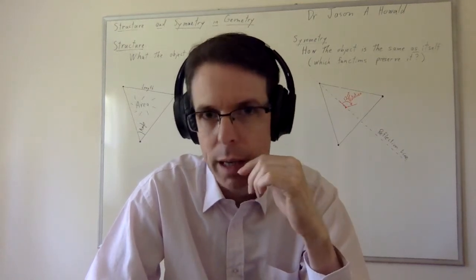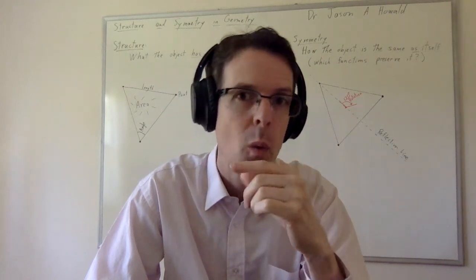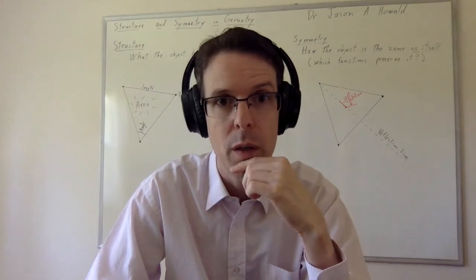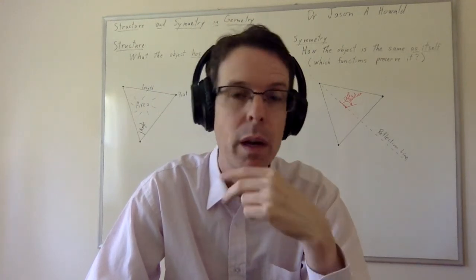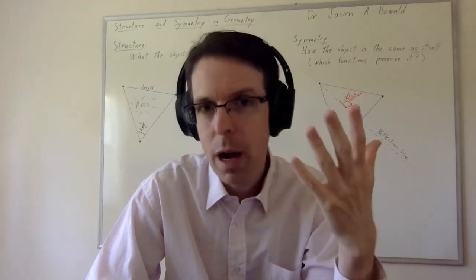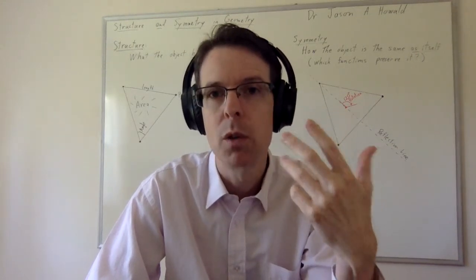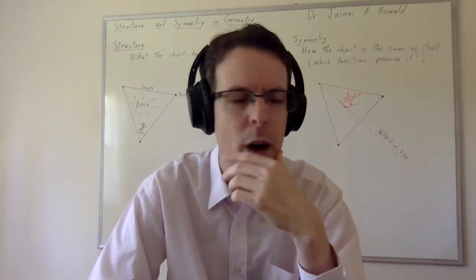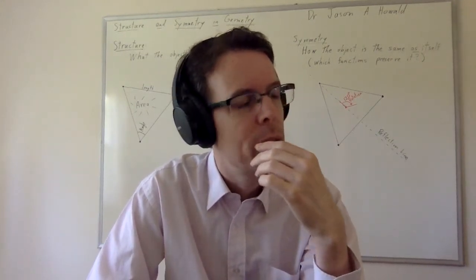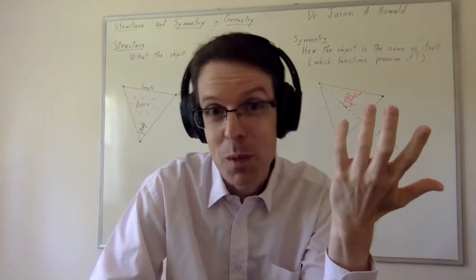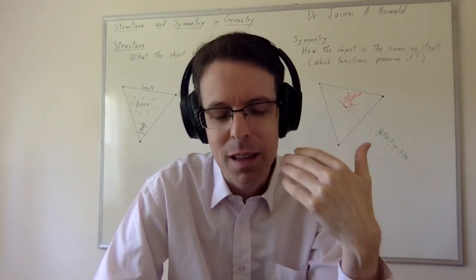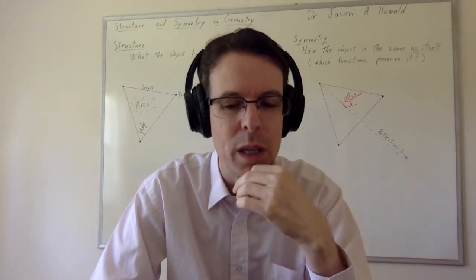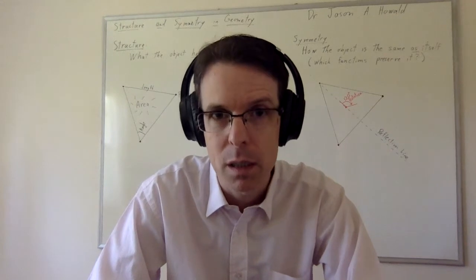If you look at the triangle and try to count how many symmetries it has: it has a 120-degree rotational symmetry one way, and a 120-degree rotational symmetry the other way — so that's two. Then it has three reflection lines, and that's five. Five seems like a very strange number to associate with the triangle, which has three sides and three points. Why would it have five symmetries? Because I miscounted. There is one more symmetry which we will always regard as a symmetry, even though it's rather trivial, and we call it the trivial or identity symmetry.